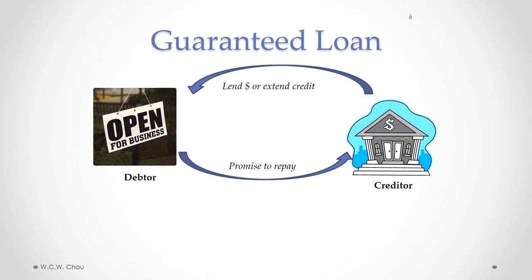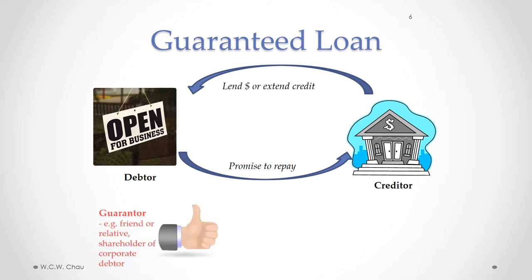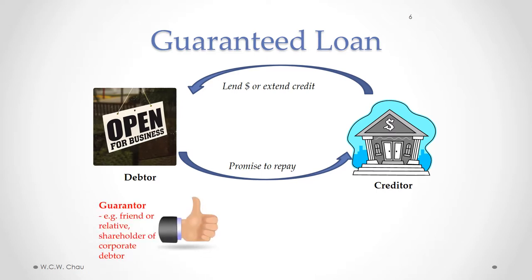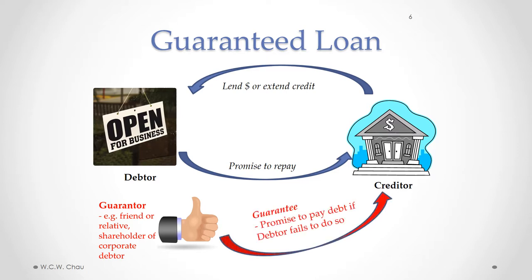A guaranteed loan is just like an unsecured loan except now we have a third party involved that we call a guarantor. A guarantor can be anyone — it could be a friend, a relative, or quite often the shareholder of a corporate debtor. So if a corporation is trying to borrow money, a primary shareholder could be asked to be a guarantor. The guarantor enters into an agreement with the creditor, promising to pay the debt if the debtor fails to do so.